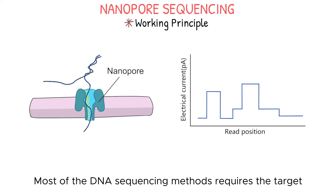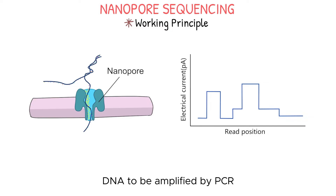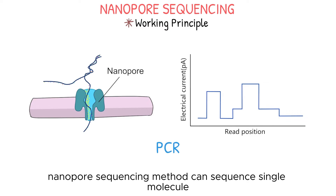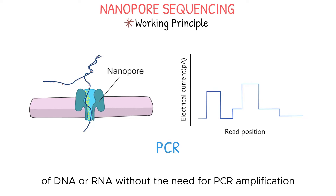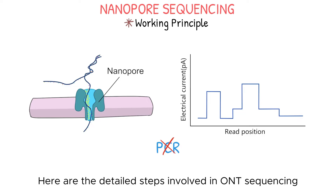Most DNA sequencing methods require the target DNA to be amplified by PCR. However, nanopore sequencing can sequence a single molecule of DNA or RNA without the need for PCR amplification. Here are the detailed steps involved in ONT sequencing.